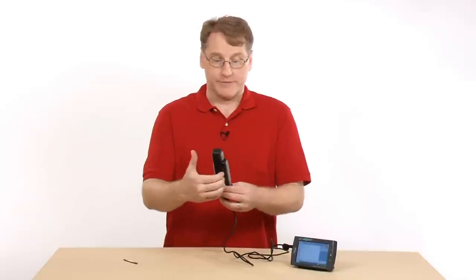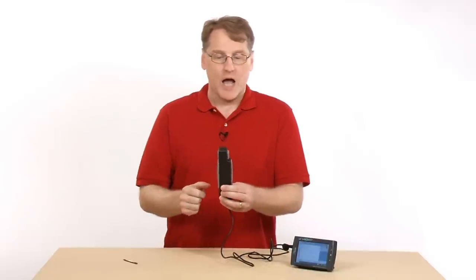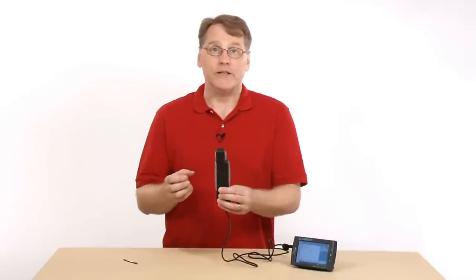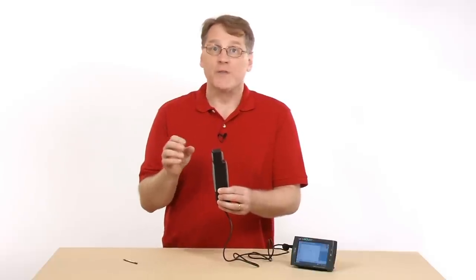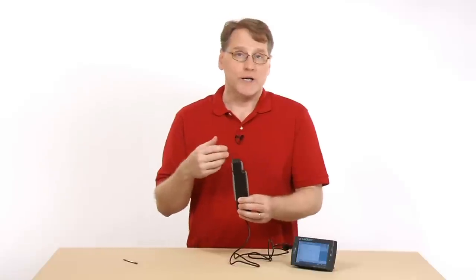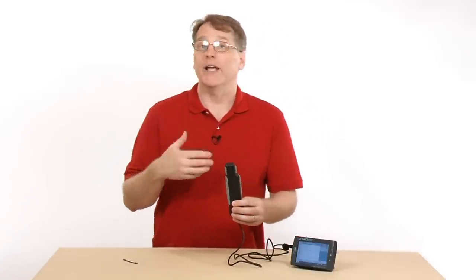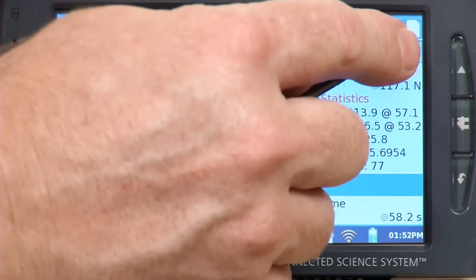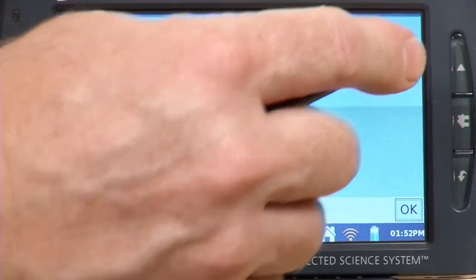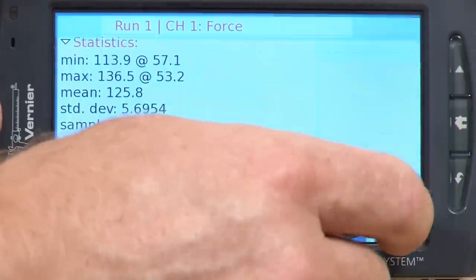I did the first run by squeezing this with my hand. I would like to do another run, and this time I'm actually going to look at the grip strength of individual fingers. So I just need to store that first run and be able to collect again. To store this run, I might want to refer back to it later. I can go up and just tap on the filing cabinet there. And that will store the first run.